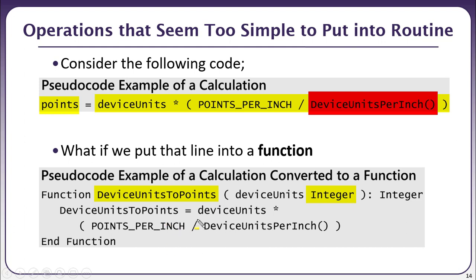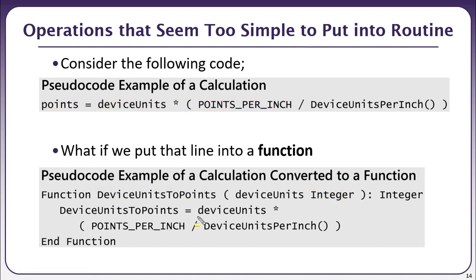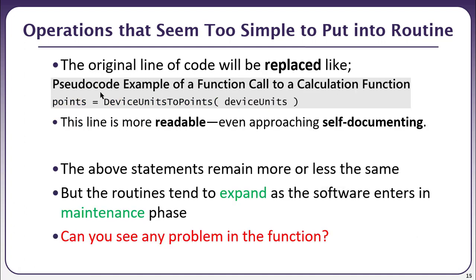In reality, the benefit appears when using this function in multiple places. It becomes a single readable line of code, clearly communicating that you have device units and are storing the result as points — making the code not only readable but self-documenting.